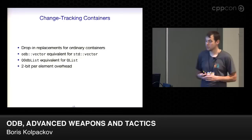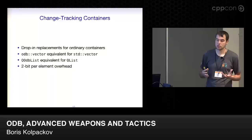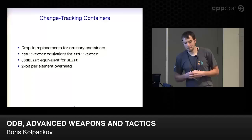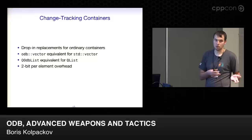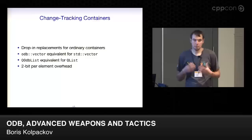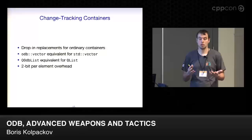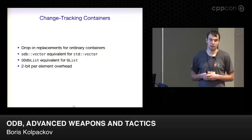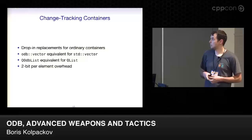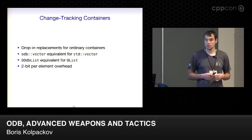The ODB way to address this is to use change-tracking containers. ODB provides change-tracking containers for a couple of standard containers. Besides storing elements like ordinary ones, they also store change information. Based on this, ODB can execute the minimum number of database statements to synchronize container state with the database. Currently ODB provides change-tracking equivalents for standard vector and queue/list. Both impose a two-bit overhead per element to store the change state. To fix our problem, all we have to do is replace STD with ODB.